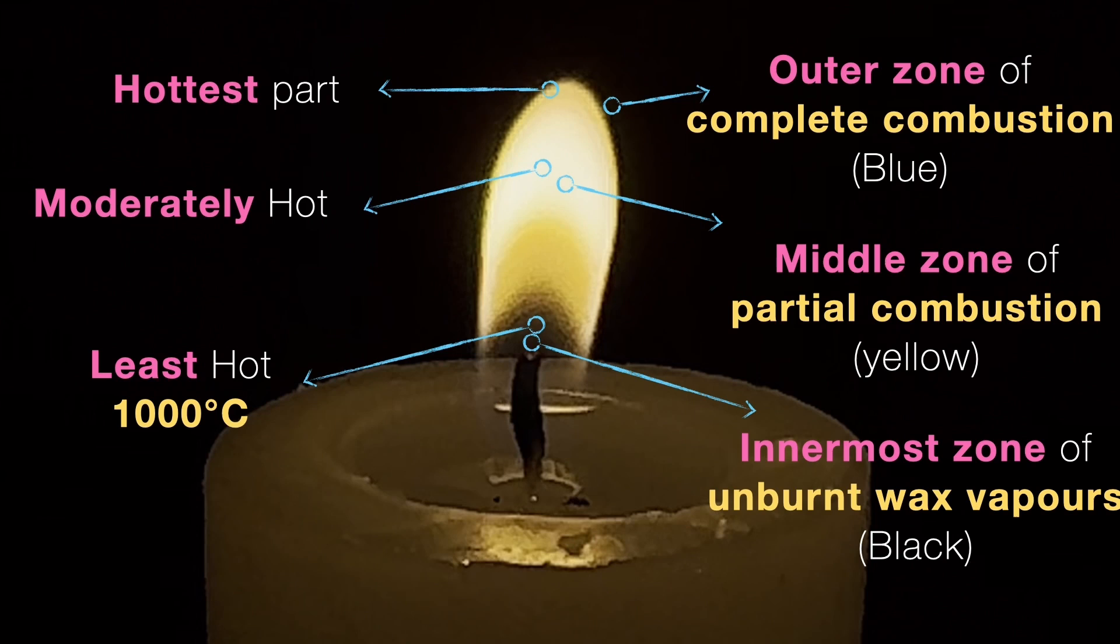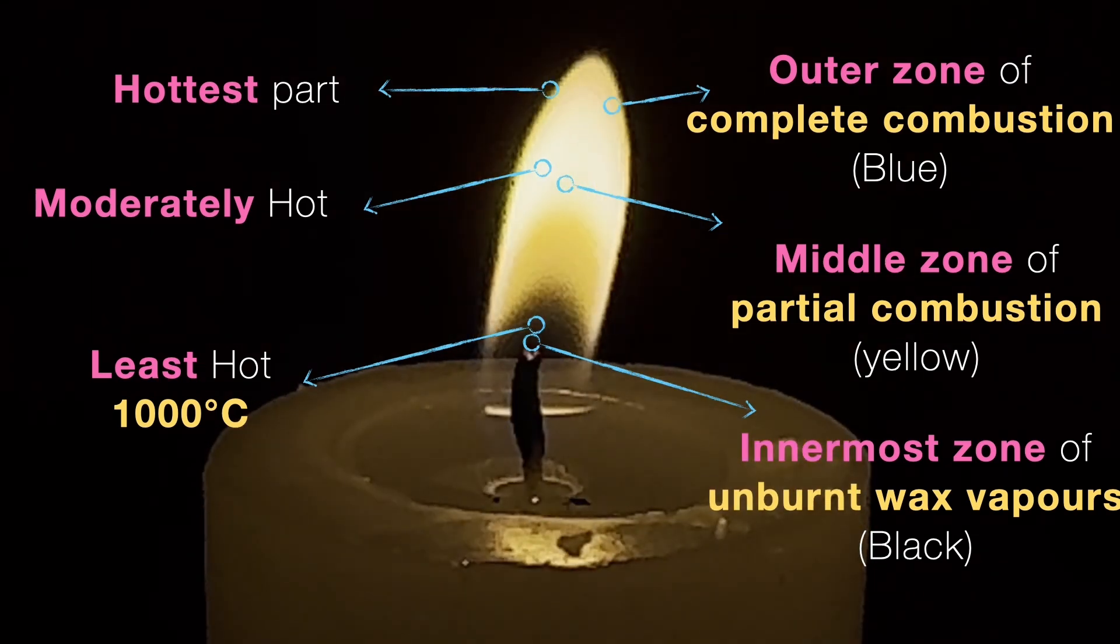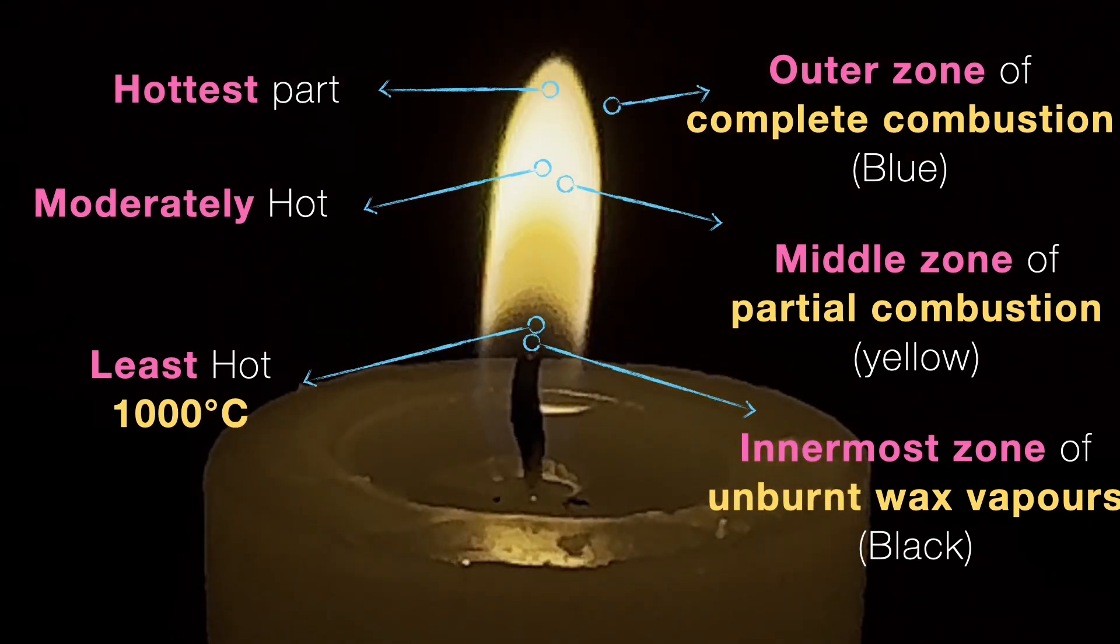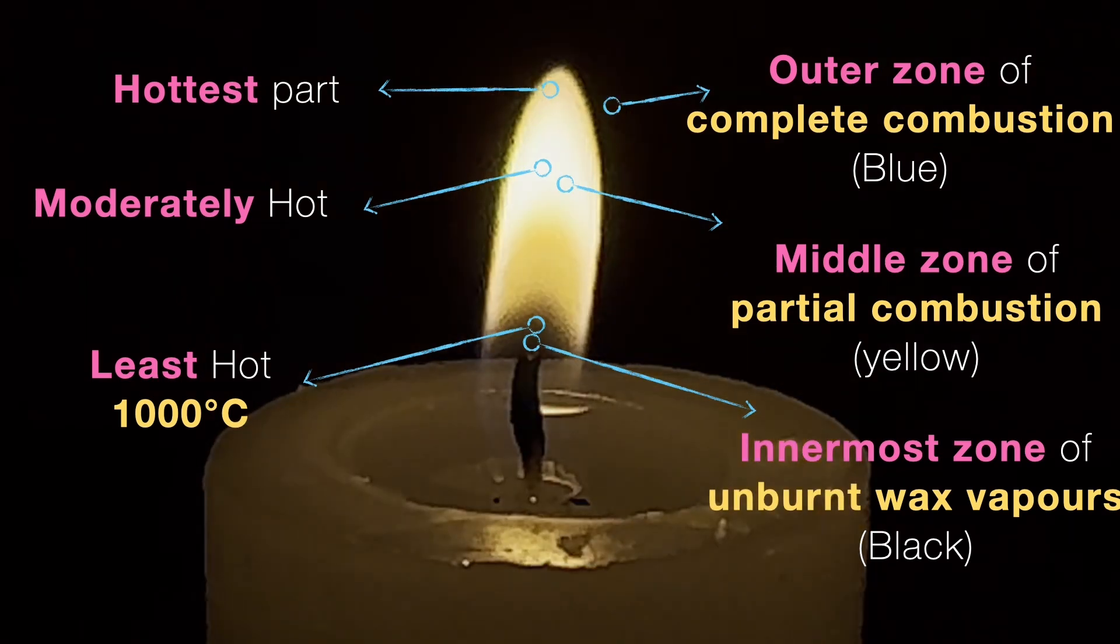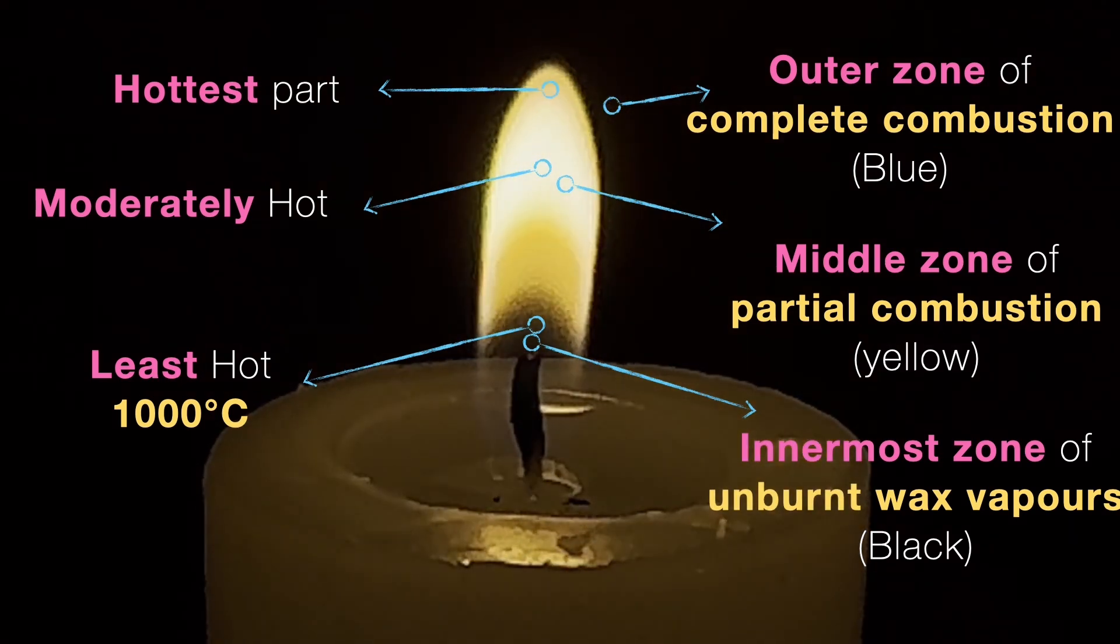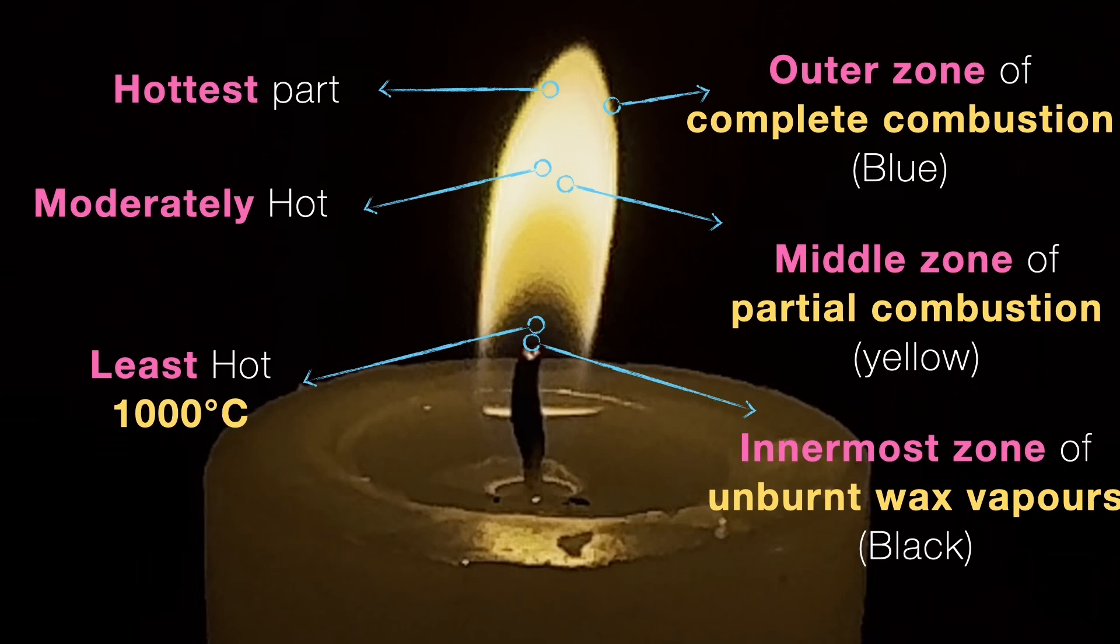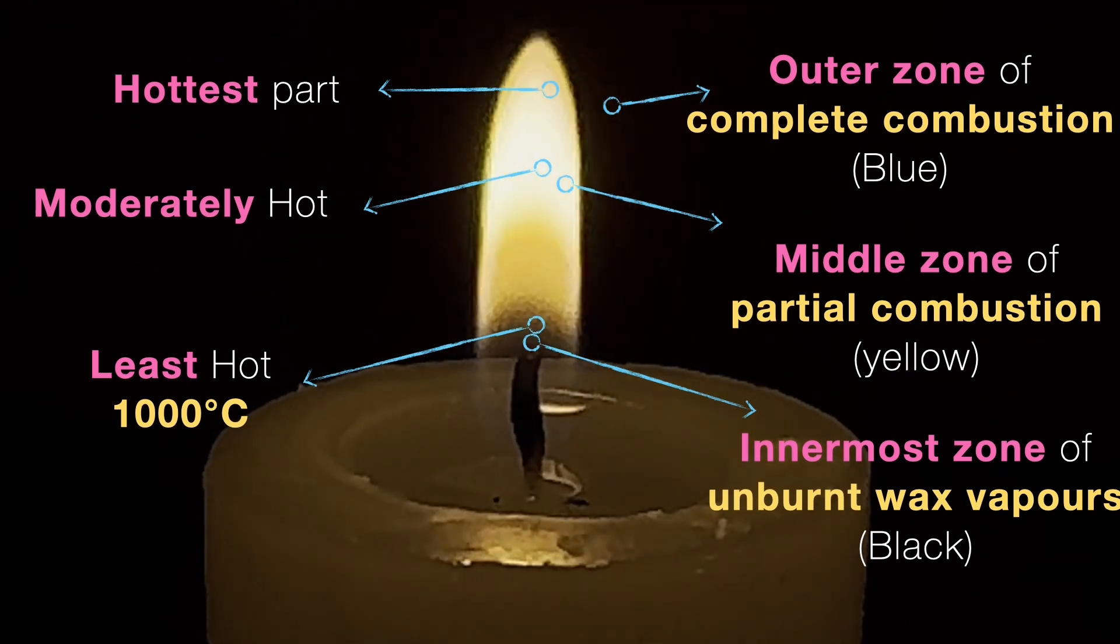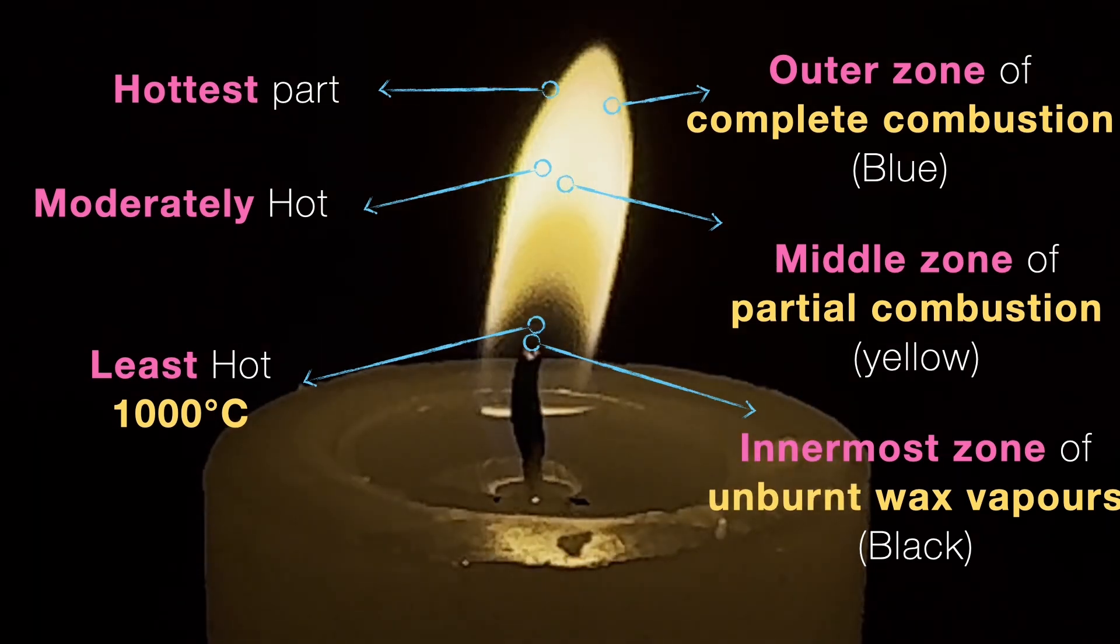So yeah, that's the structure of a flame. Outer zone: blue, hottest, with complete combustion. Middle zone: yellow, moderately hot, with partial combustion. And inner zone: dark, least hot, no combustion at all, just wax vapor.